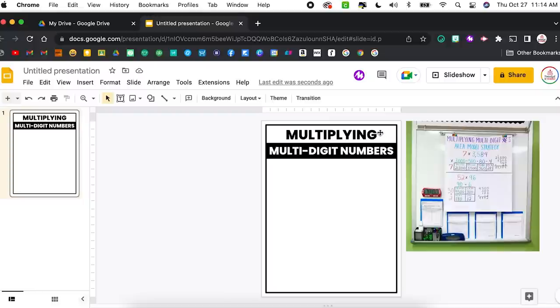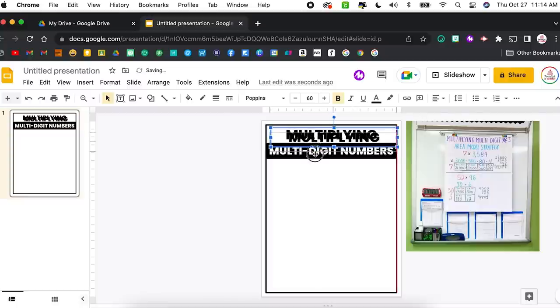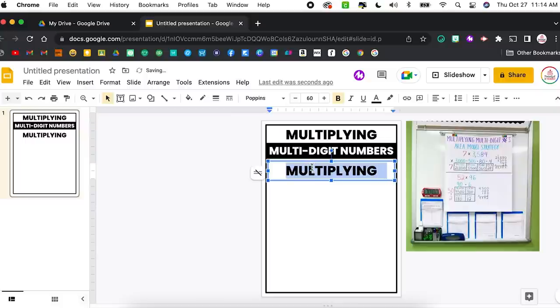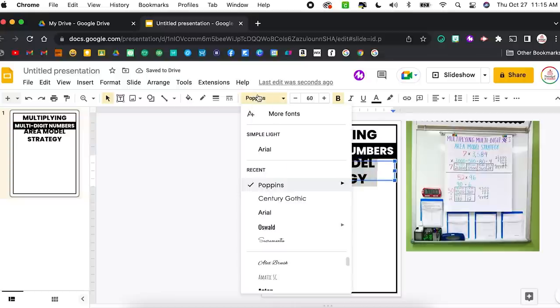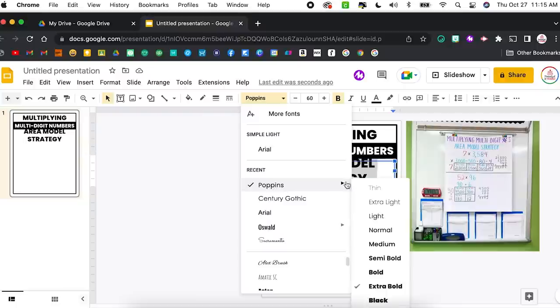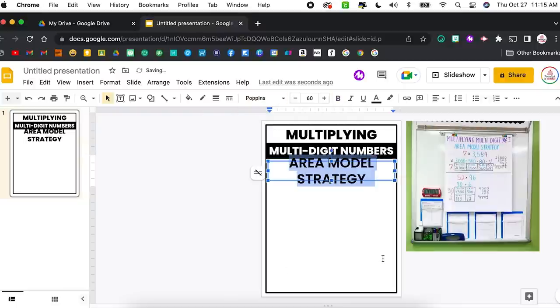Perfect. That's what I do love about digital anchor charts. You can kind of play around with it, move things around, resize them. Whereas you can't really do that on a paper anchor chart. I'm going to add area model strategy as kind of a heading, if you will. So I'm going to select this top text box and I'm going to duplicate it. I'm using a Mac. So I'm holding down command and then pressing D on my keyboard. But if you are using a PC, you would hold down control and then press D.